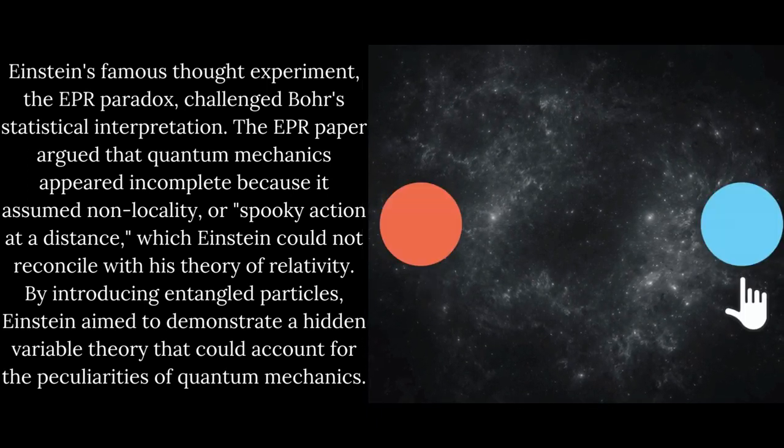The EPR paper argued that quantum mechanics appeared incomplete because it assumed non-locality, or spooky action at a distance, which Einstein could not reconcile with his theory of relativity. By introducing entangled particles, Einstein aimed to demonstrate a hidden variable theory that could account for the peculiarities of quantum mechanics.